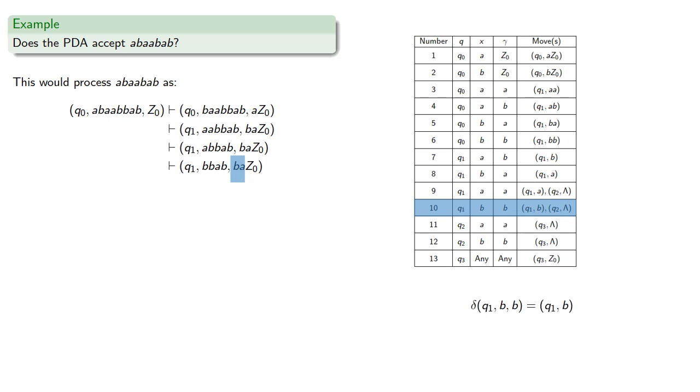Remember, we don't use q1 bb goes to q2 lambda because this isn't the right place for it. Again, we're assuming a non-deterministic pushdown automaton, which means we'll always make the right decision. In this case, the right decision is to stay in state q1.